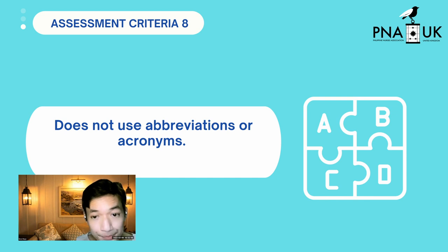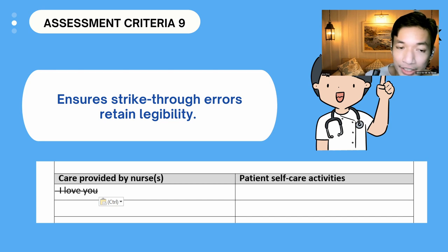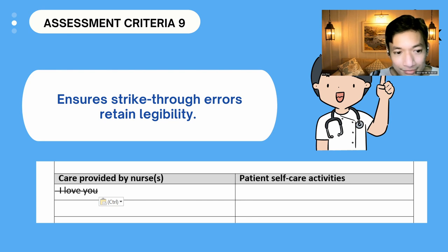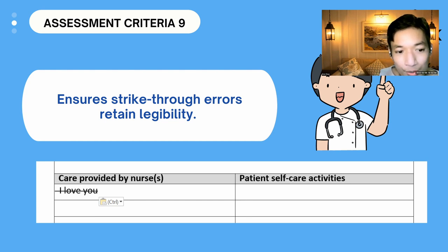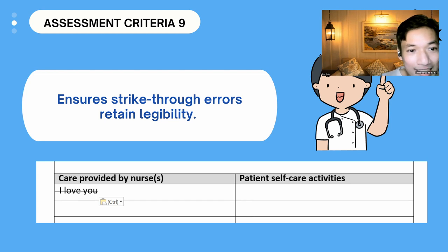Criteria number nine ensures strikethrough errors while retaining legibility. If you wrote something incorrectly, put a strikethrough — that is how you correct an error. You can also put your initials on top. Based on the marking criteria, a strikethrough for an error is fine, and you may write your initials if you like.